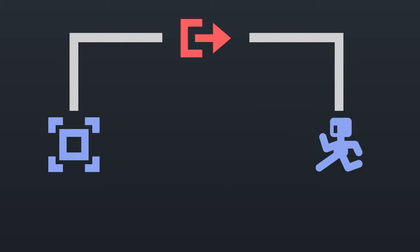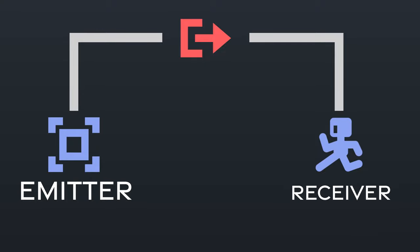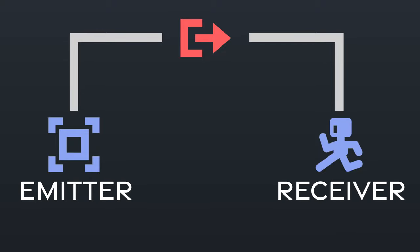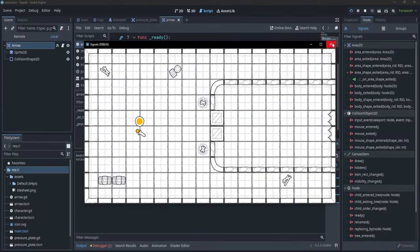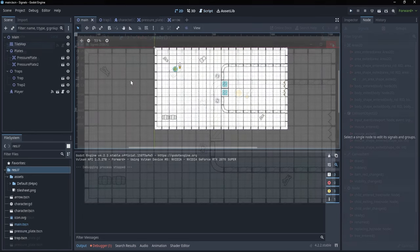One node is going to be the emitter and the other one is going to be the receiver. Whenever the emitter sends a signal, it will make the receiver react to it by calling the function they're connected through. While this is an easy concept, it simplifies the code so much that any project would greatly benefit from using it.